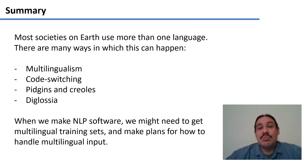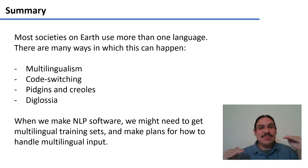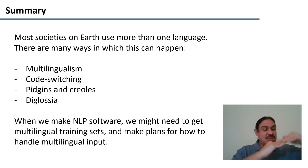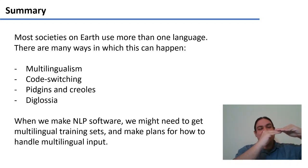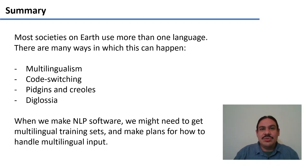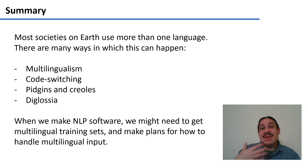That's a quick summary. Most societies on Earth use more than one language. It is a historical accident that English-speaking societies are more monolingual than other societies on the planet. For societies that have more than one language, there are many combinations: multilingualism (languages well separated), code switching (going back and forth), pidgins and creoles (going back and forth between high-prestige varieties and home varieties), and diglossia (very clear functional edges — this language does this, that language does that). When you make NLP software, you might need multilingual training sets just for one society, and you'll need to handle multilingual input and determine the best output in each circumstance.